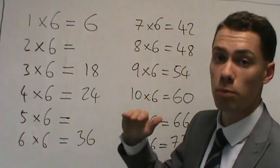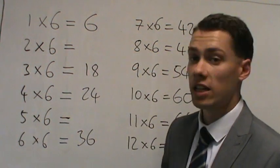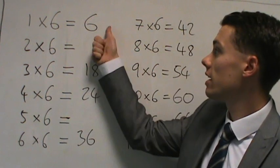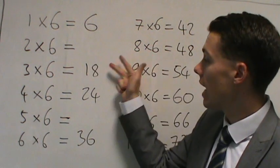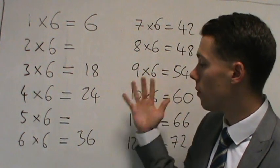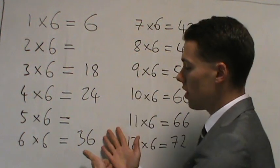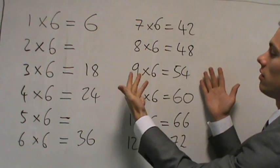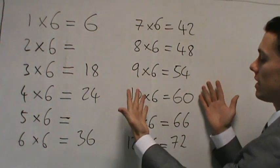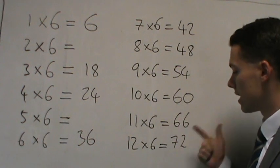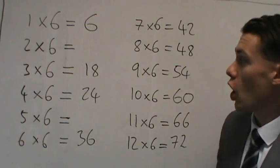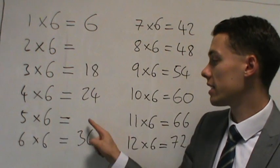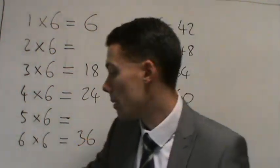Now this time as I go through I'm not going to actually say these ones. I'm going to leave a pause and when I pause I'd like you to say the right answer please, okay? So let's go through: 6, 18, 24, 36, 42, 48, 54, 60, 66 and 72. So hopefully you've got that 2 times 6 is 12 and 5 times 6 is 30.